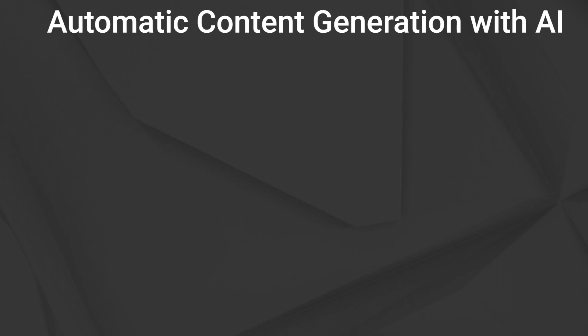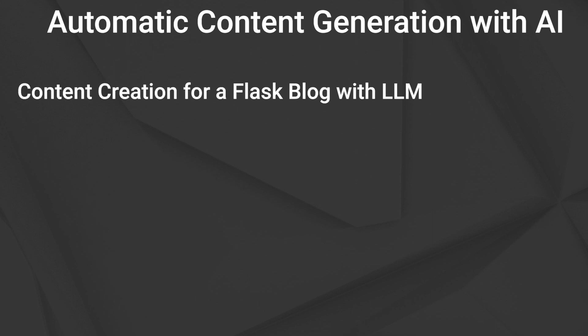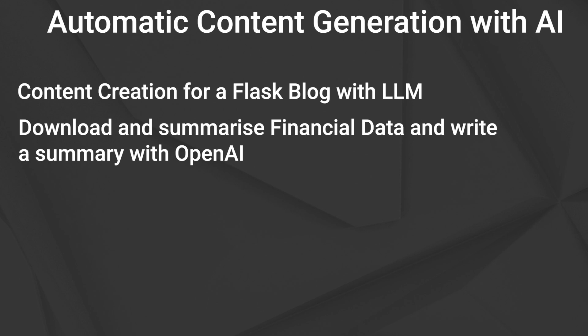AI content generation is one of the most relevant use cases of large language models. In this video I want to show you how to set up a blog with automated content creation. We retrieve financial data from a third party API, summarize it and let OpenAI write a weekly report which we then display on the website. The process is done automatically via a cron job and we use Flask for the website.